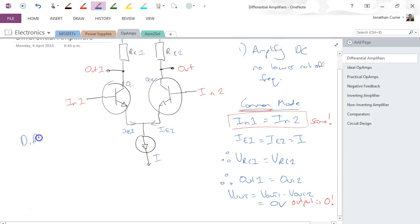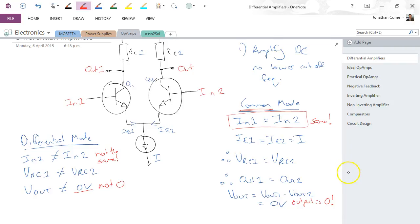In differential mode, which is how we normally operate these devices, the inputs are not the same, which means that the voltage drops are not the same, and therefore Vout is not equal to 0 volts. So in differential mode, the same input is not applied to both inputs, so different inputs, not the same, and not 0. So those are the two ways that we can say that this device operates.